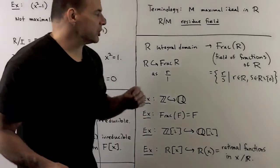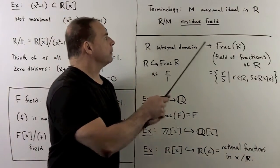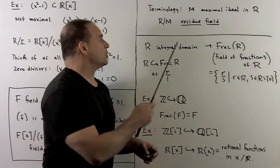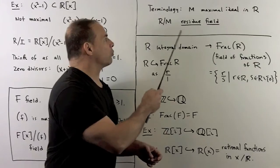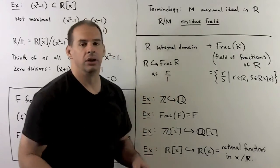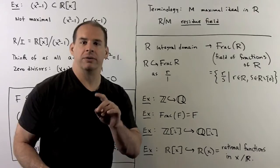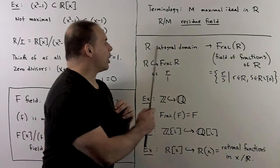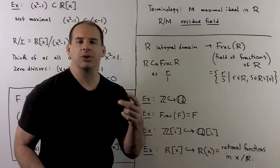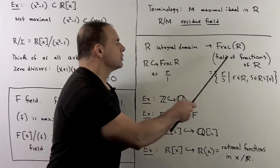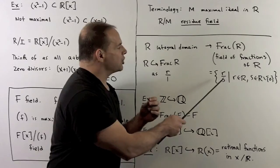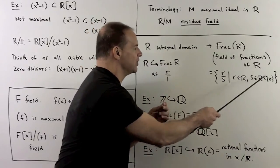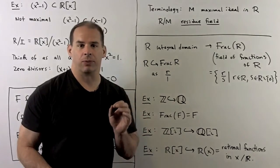To finish, a little terminology: if M is a maximal ideal in a commutative ring R, then we call R mod M the residue field. For our third construction for fields — which we've already gone over — if R is an integral domain, we pass to the field of fractions of R. This takes all fractions R over S, where R is in the ring and S is in the ring but non-zero.